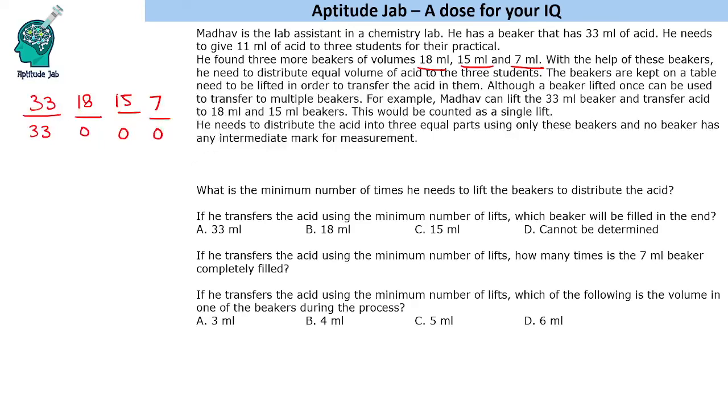So 18 minus 7 is 11. That means he will transfer 18 here and 7 here and he can get 11 here. Another thing we can think is 33. If he distributes 15 and 7, 15 plus 7 is 22. If he distributes 22, he will be left with 11.